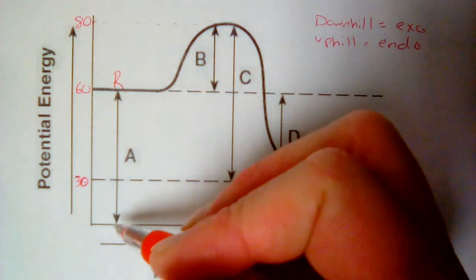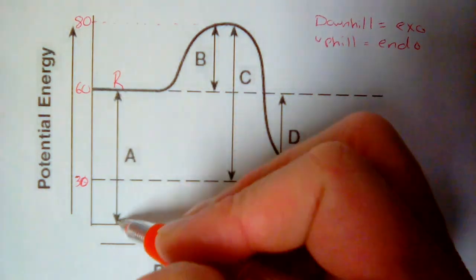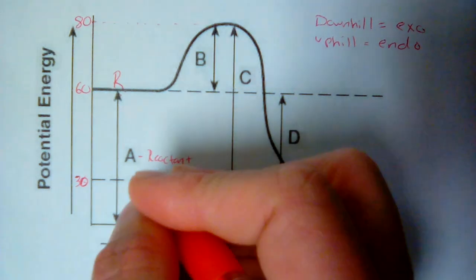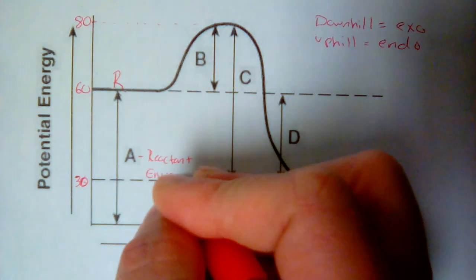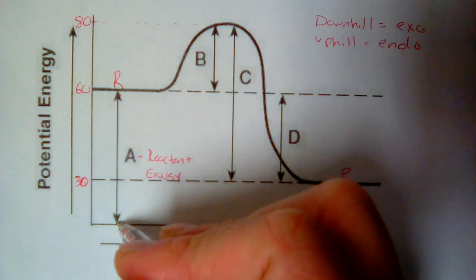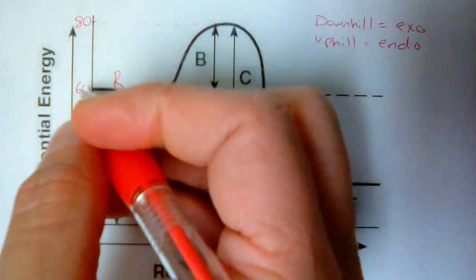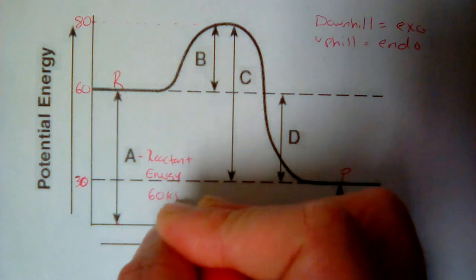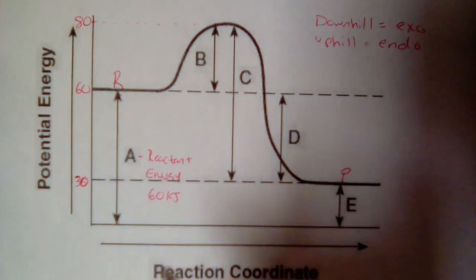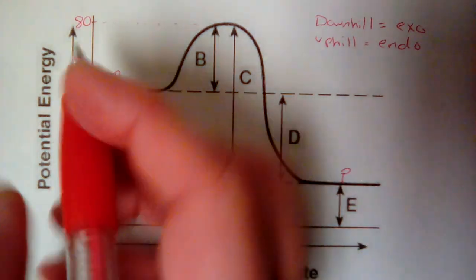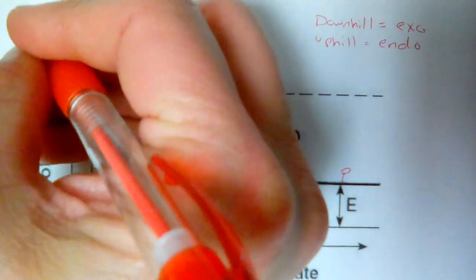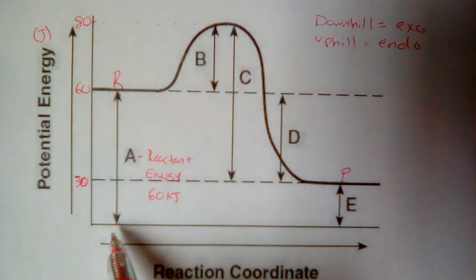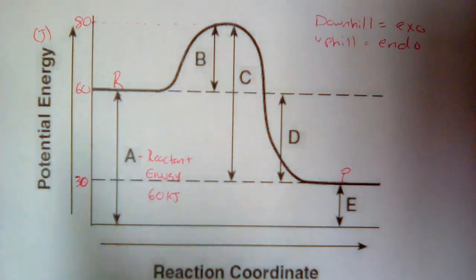The energy of your reactants is A. This is reactant energy. It takes us from the x-axis up to where the reactants are. And our reactant energy in this case is 60, whatever it is. It might be kilojoules. It might be joules. Those are the two most common. So we'll say this is kilojoules. My reactant energy would be 60 kilojoules. Again, it's just how far up that y-axis we've gone.